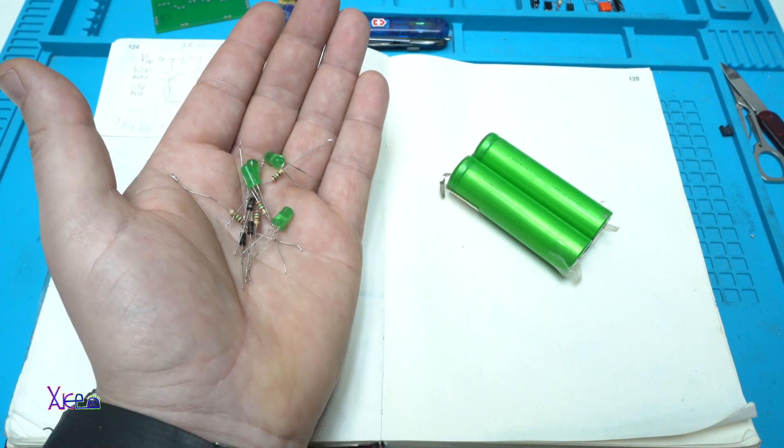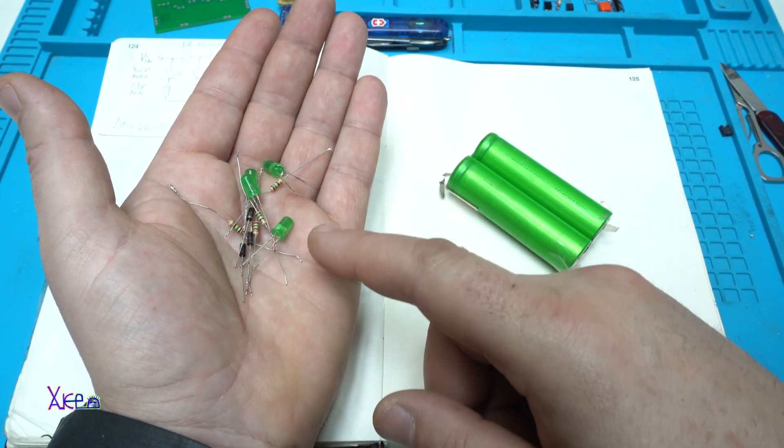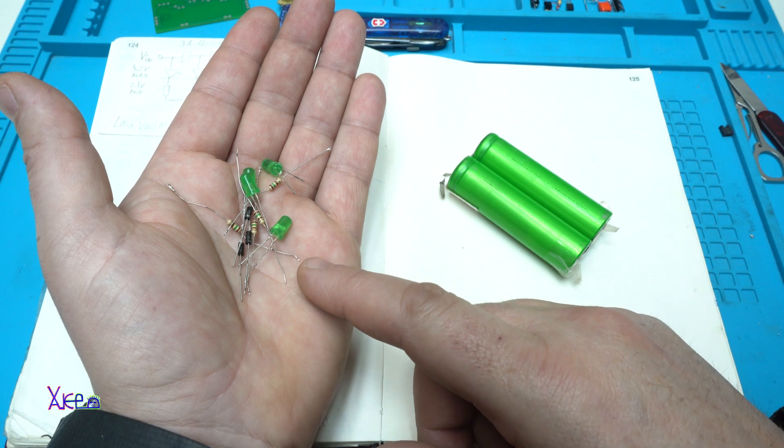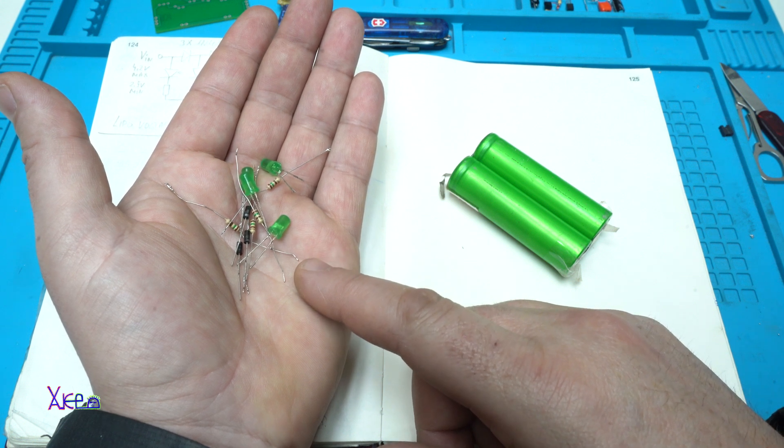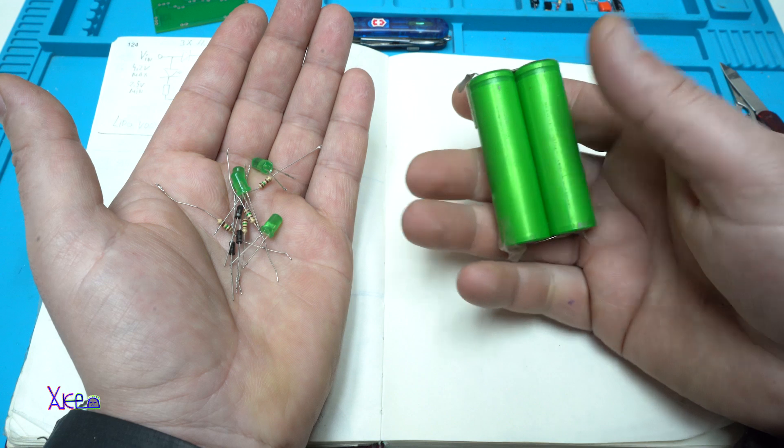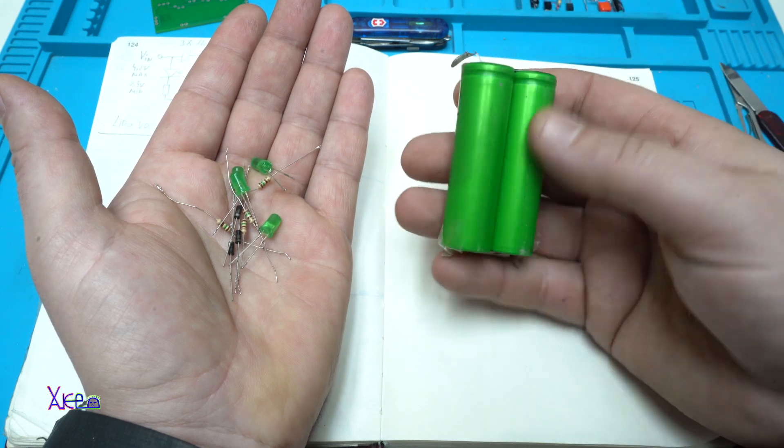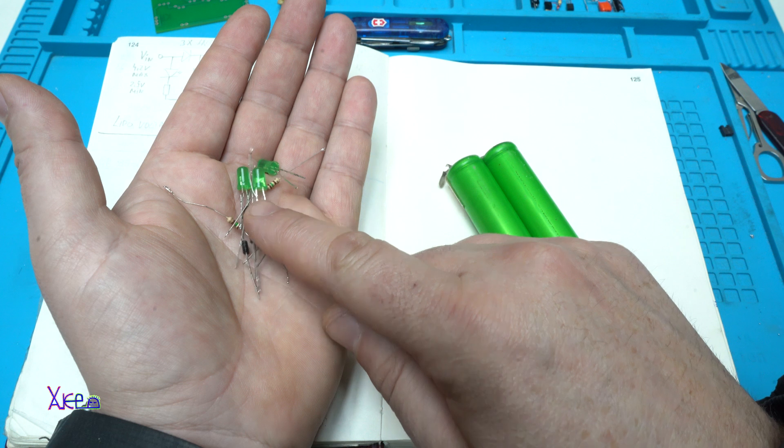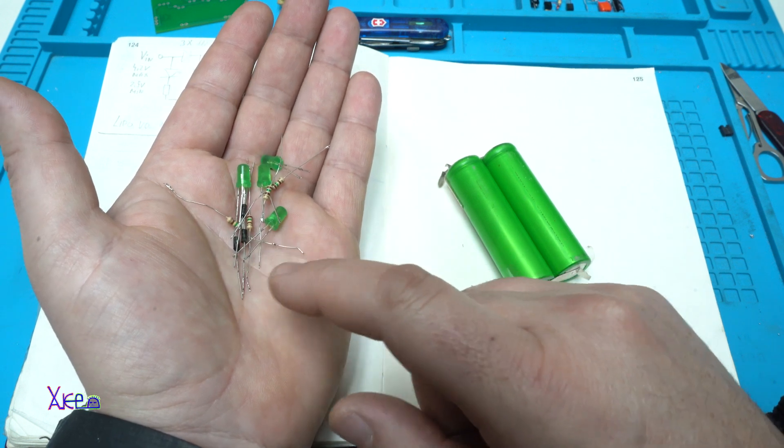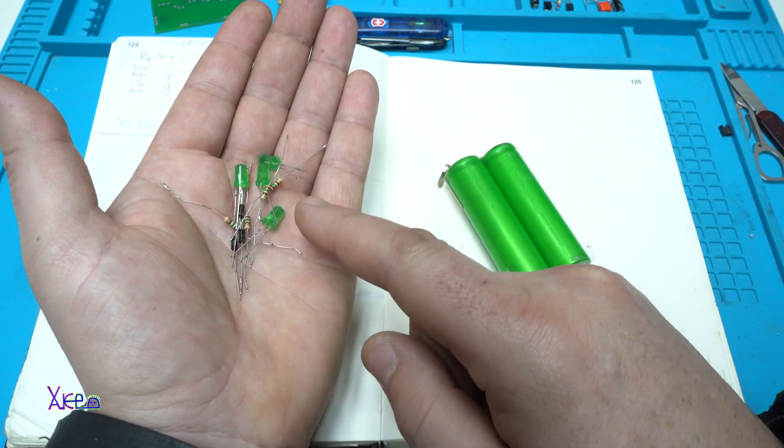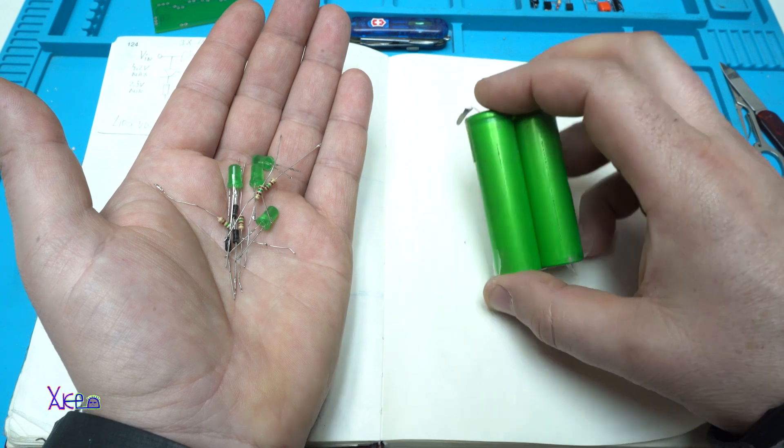Hello Hecktubers and welcome back to my channel. In today's video I'm going to show you how you can build a simple circuit for making a voltage monitor for lithium batteries like this 3.7 volt, using only basic electronic components like LEDs, resistors and diodes.